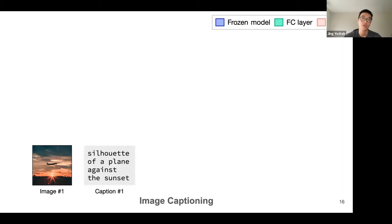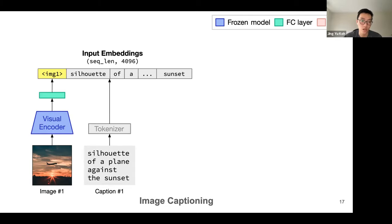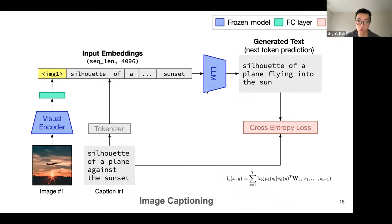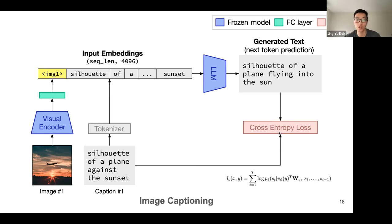Fromage is trained on two tasks. For image captioning: given an image and caption, the image is encoded with a frozen visual encoder to a single vector. The caption is tokenized and appended to the image vector, then fed into a frozen large language model originally pre-trained on text. The LLM predicts the next token — generating captions conditioned on image inputs — optimized with cross-entropy loss for next token prediction.